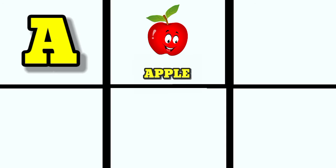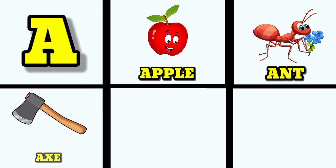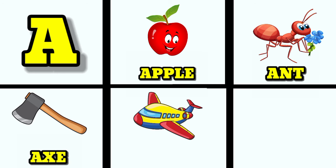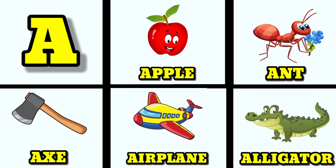A is for apple. A is for ant. A is for axe. A is for airplane. A is for alligator.